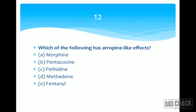Next question: which of the following has atropine-like effects? Options: morphine, pentazocine, pethidine, methadone, and fentanyl. All these are opioid drugs. Atropine-like effect means muscarinic blocking effect — antispasmodic action, dilation of pupil. Among all these opioids, only pethidine is structurally related to atropine. It acts on opioid receptors but has atropine-like structure, so pethidine has atropine-like actions. Answer: pethidine.